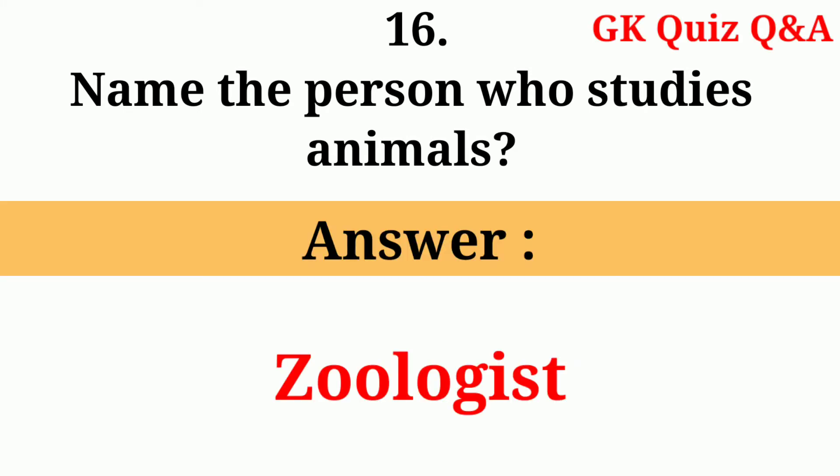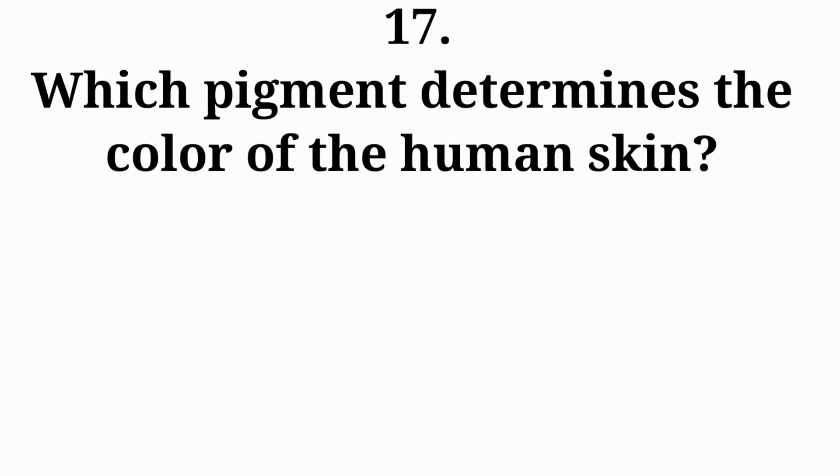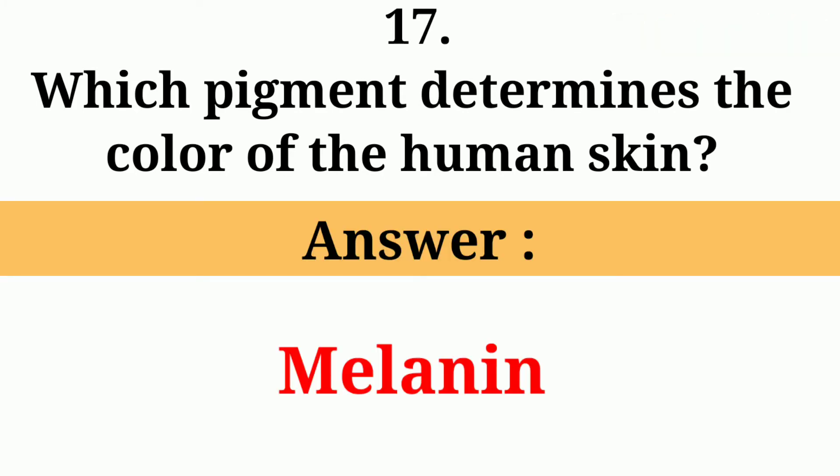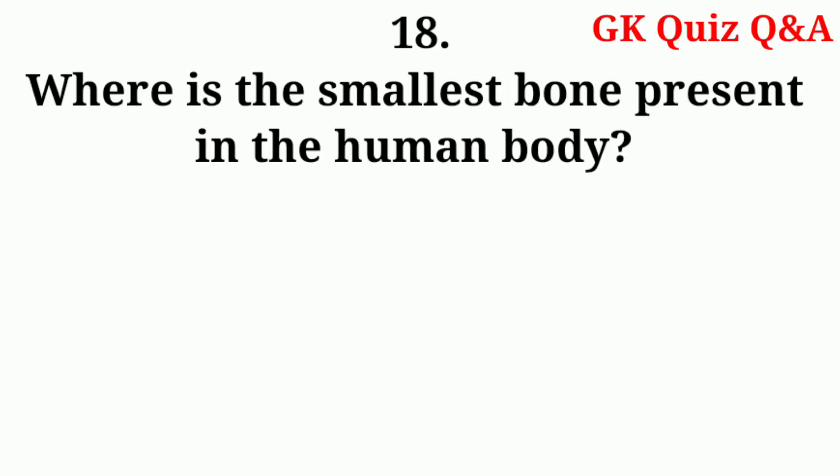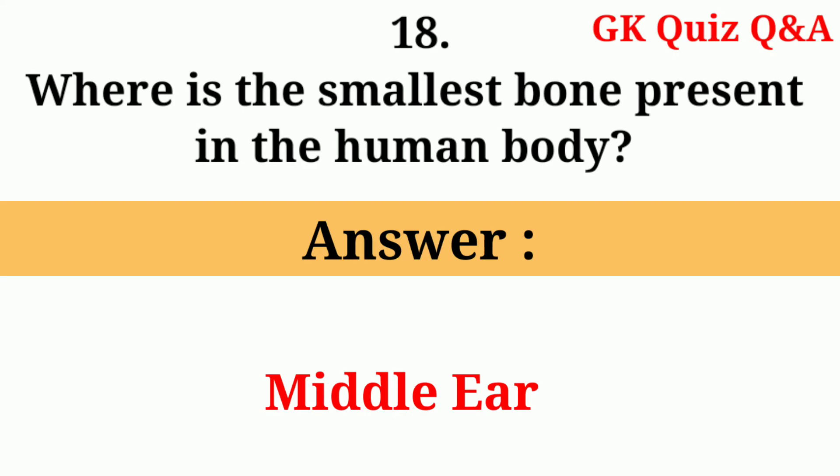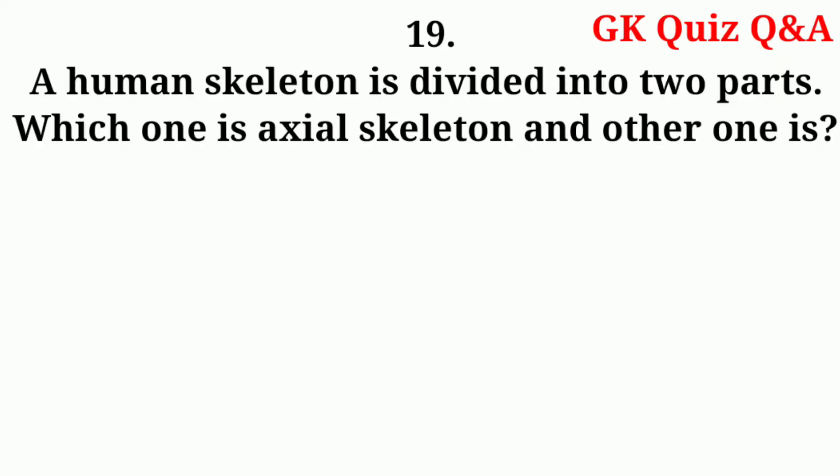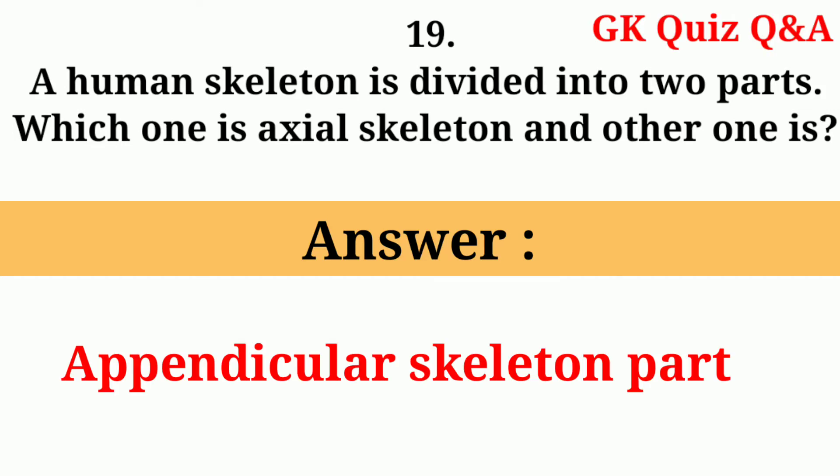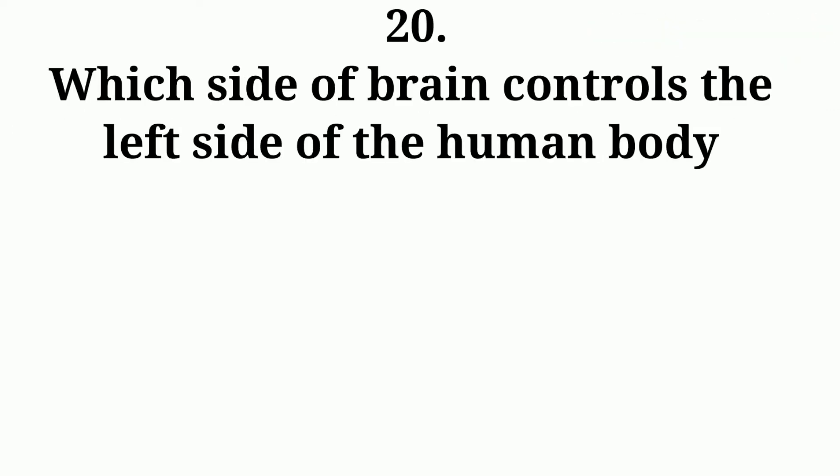Which pigment determines the color of the human skin? Answer: Melanin. Where is the smallest bone present in the human body? Answer: Middle ear. A human skeleton is divided into two parts which one is axial skeleton and other one is appendicular skeleton. Which side of the brain controls the left side of the human body?